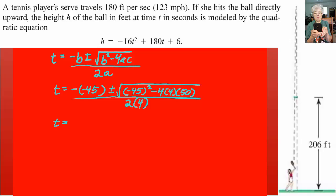That will give us T equals 45 plus or minus the square root of 2025 minus 800, all over 8. So T will equal 45 plus or minus the square root of 1225 all over 8.